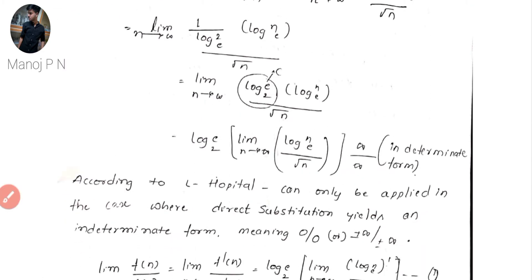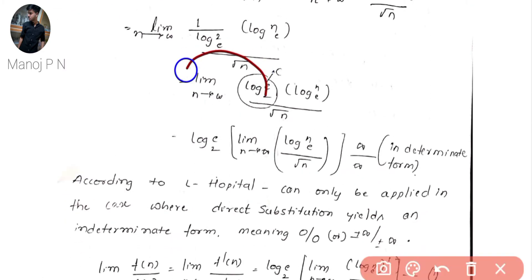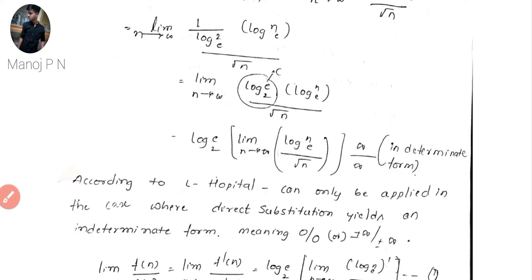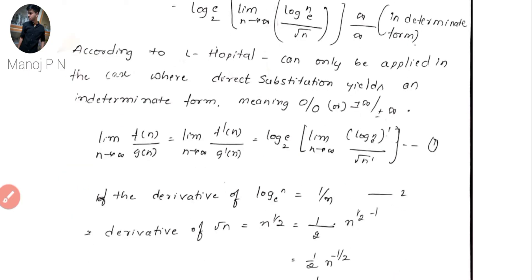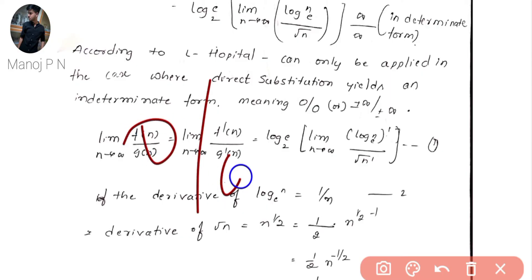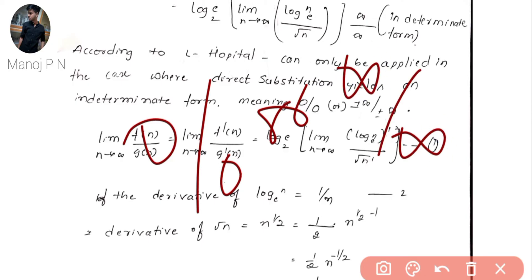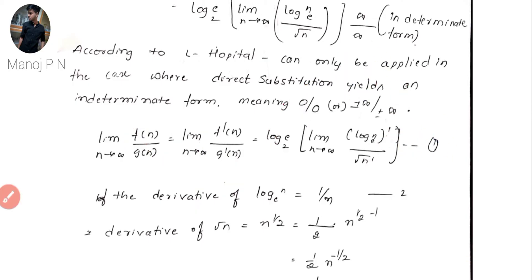We take that constant outside and are left with log n base e divided by root n. When we apply the limit n tends to infinity, this becomes infinity divided by infinity, which is an indeterminate form. At this point we use L'Hospital's rule, which applies when we get 0/0 or infinity/infinity.